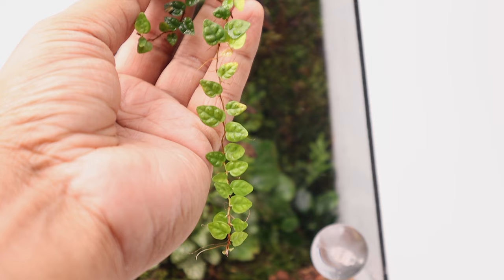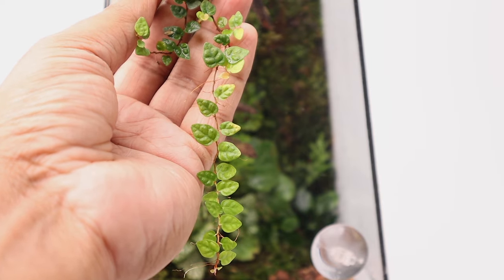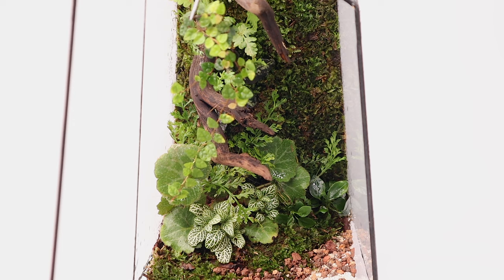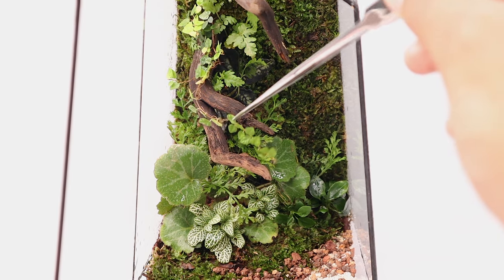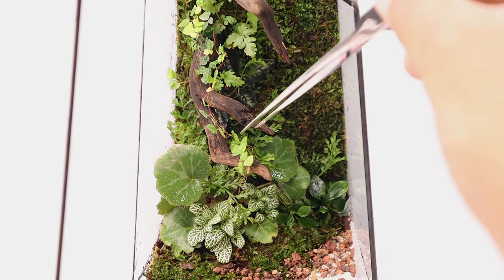I have a bit more planting to do to achieve the look I am aiming for. I plant a long cutting of ficus pumila on the wall and extend it to rest on the driftwood like a wild creeper.